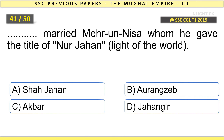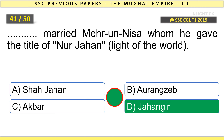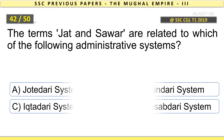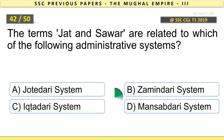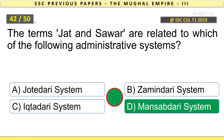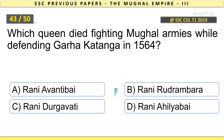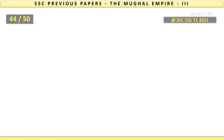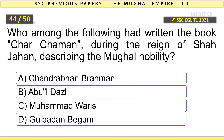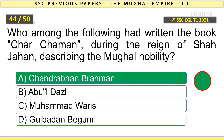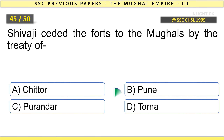Who married Mehranisa whom he gave the title of Nur Jahan, light of the world? Jahangir. The terms Jaat and Samwar are related to which administrative system? Mansabdari system. Which queen died fighting Mughal armies while defending Garha Katanga in 1564? Rani Durgavati. Who wrote the book Charchanam during the reign of Shah Jahan describing the Mughal nobility? Chandrabhan Brahman. Shivaji ceded the forts to the Mughals by the Treaty of Purandar.